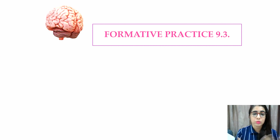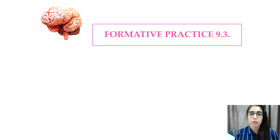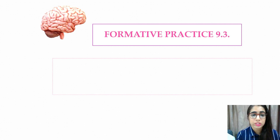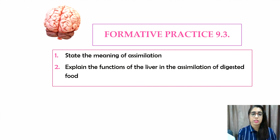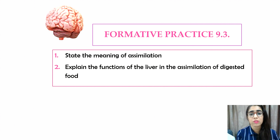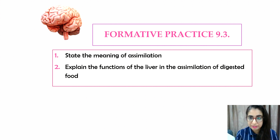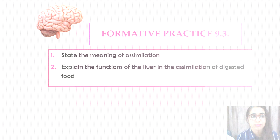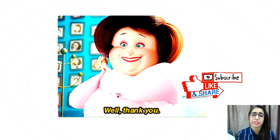Once you are done, you have to complete formative practice 9.3 on page 154. Question 1 is to state the meaning of assimilation, and question 2 is to explain the functions of the liver in the assimilation of digested food. Go through the questions, do your notes, and make sure your notes are complete. Thank you for watching, please don't forget to like and subscribe. Bye-bye.